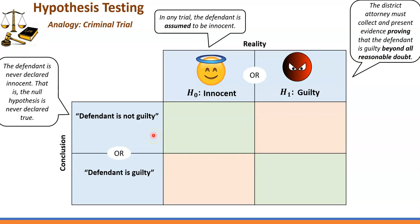Instead, this is how we draw the conclusion. We either say that we reject the null hypothesis — if the conclusion is that the defendant is guilty, we reject H0 — or if the defendant is found not guilty, we say do not reject H0. So these two wordings are: reject H0 or do not reject H0, based on the proof we found from the sample.